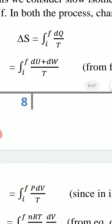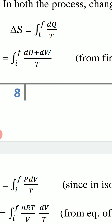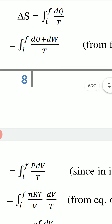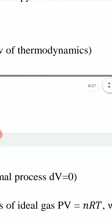The change in entropy is ΔS = ∫dq/T, valid for a reversible process. We consider reversible isothermal expansion of ideal gas where temperature remains constant and volume changes from Vi to Vf. From the first law, dq = dU + dW, so ΔS = ∫(dU + dW)/T.